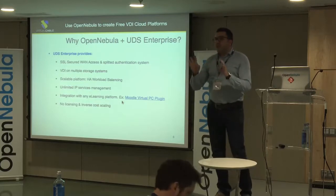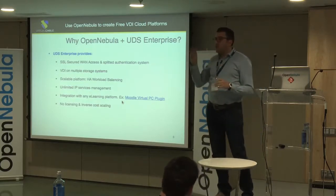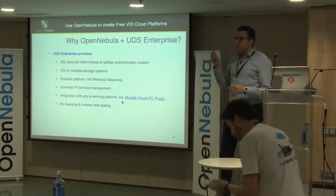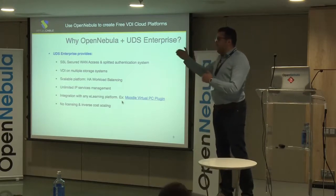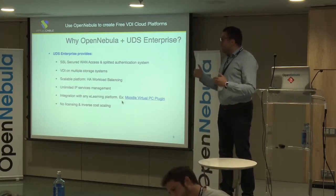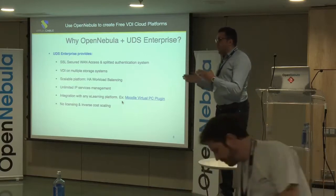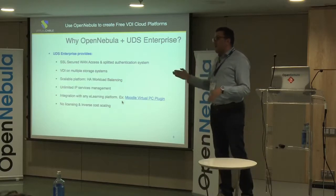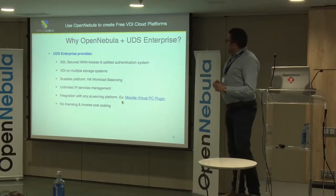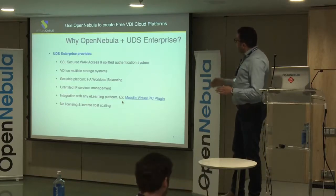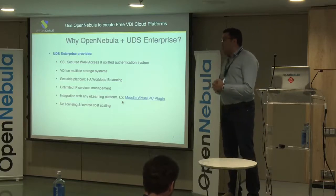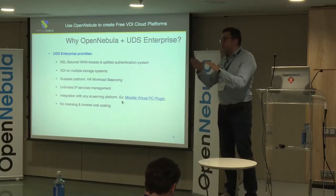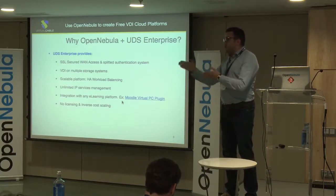UDS Enterprise is a VDI composed of three components: the server (broker), the tunneler responsible for the secure channel, and the database — which can be any third-party database, open source or otherwise, but MySQL is used by default. For a scalable platform, high availability and workload balancing are achieved by dispatching the load between the broker and the tunneler in high-charge scenarios.